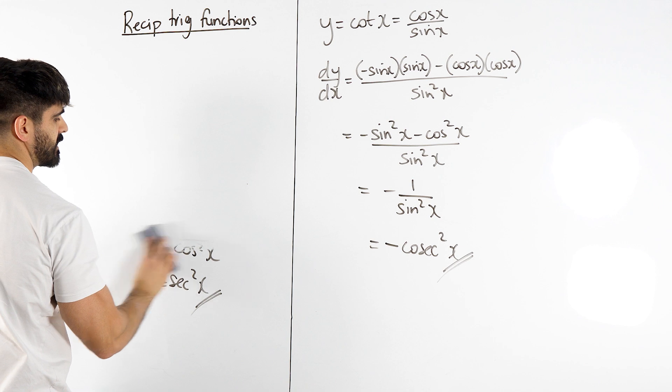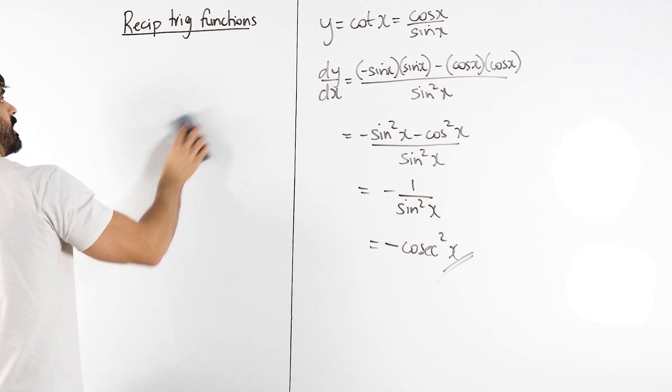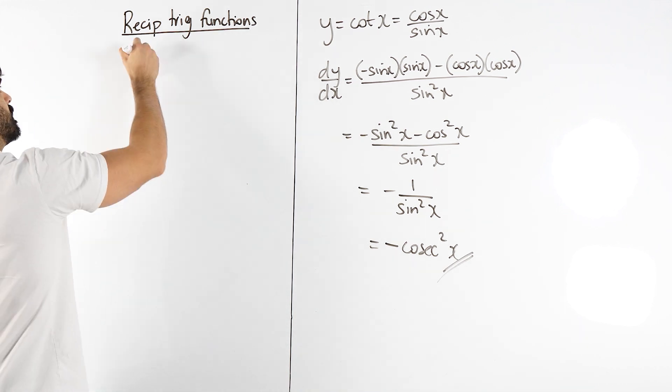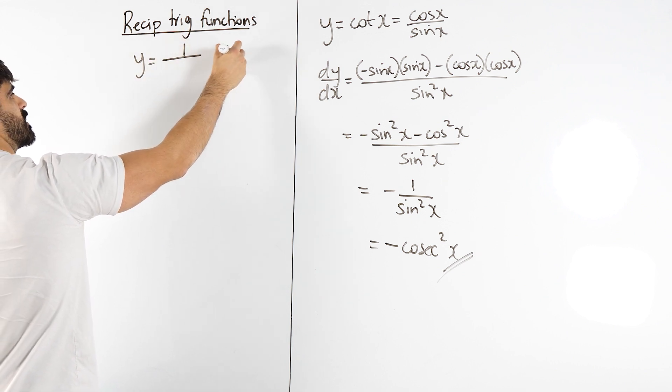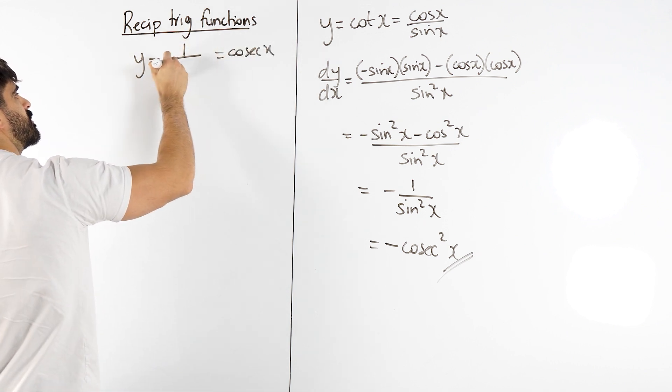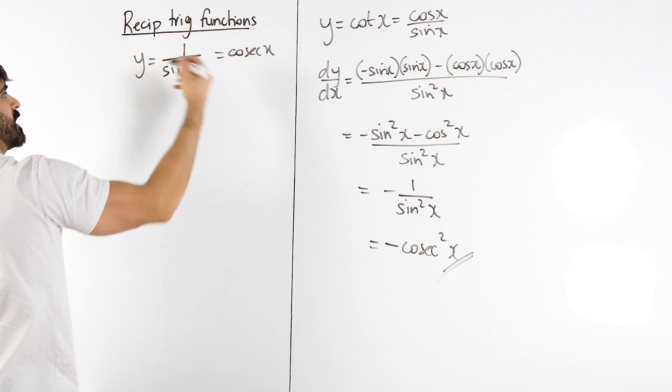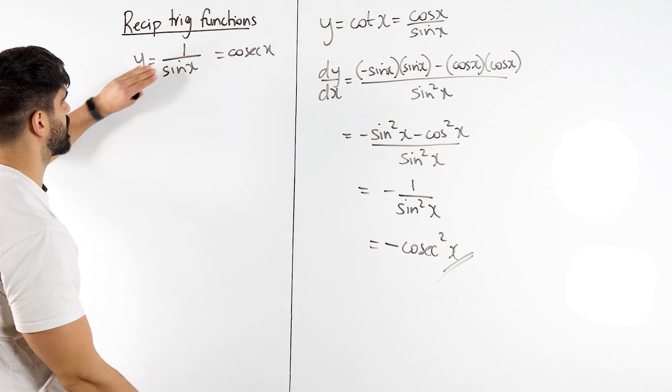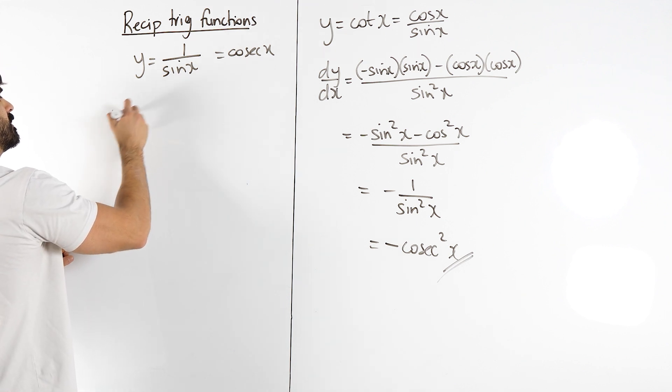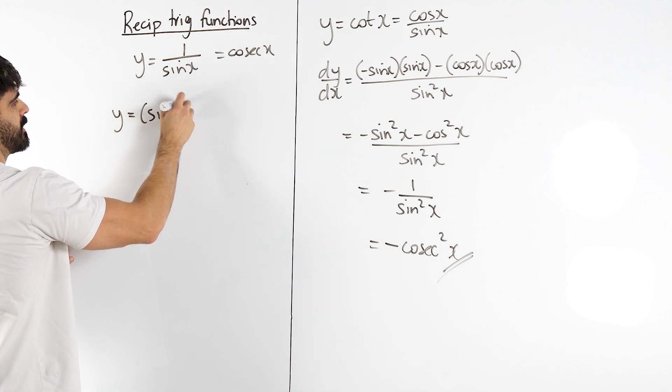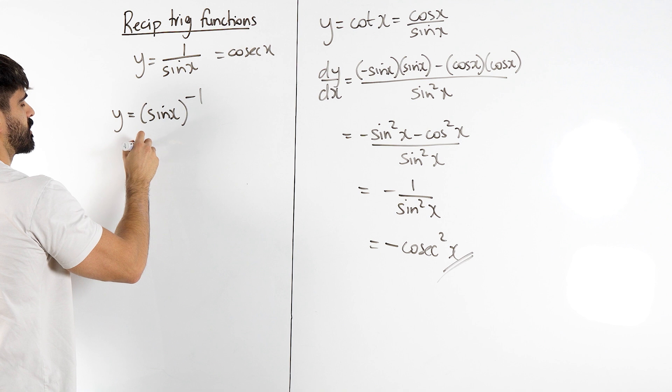For that we're going to rewrite it as one over sin, so y equals cosec equals one over sin. How do we differentiate this? Imagine I covered up the sine, it's one over x, we need to bring it up as a power function. So we get sin x to the minus one.